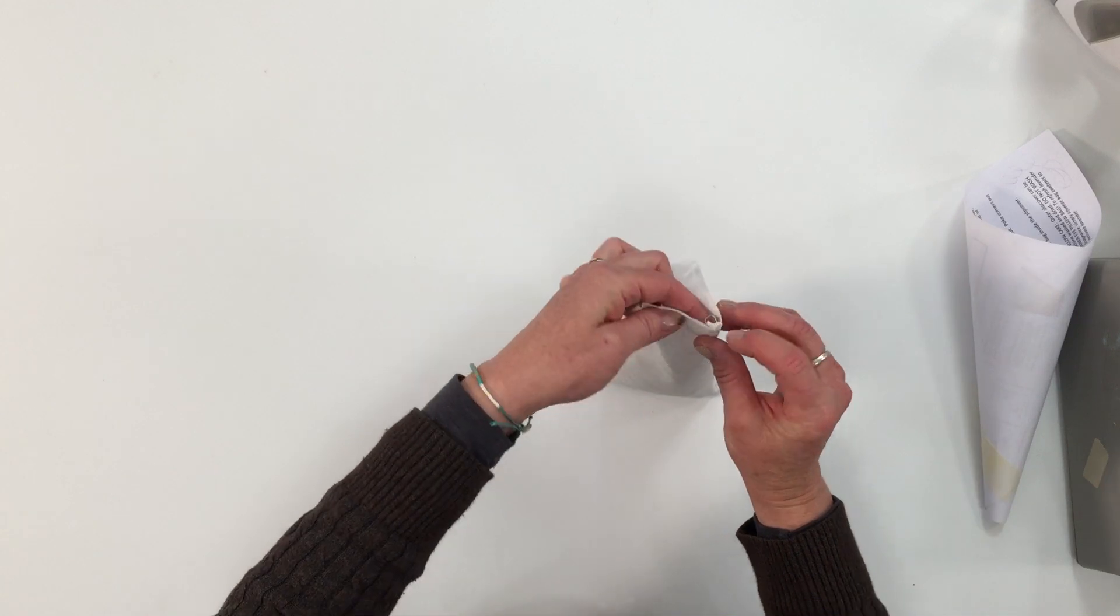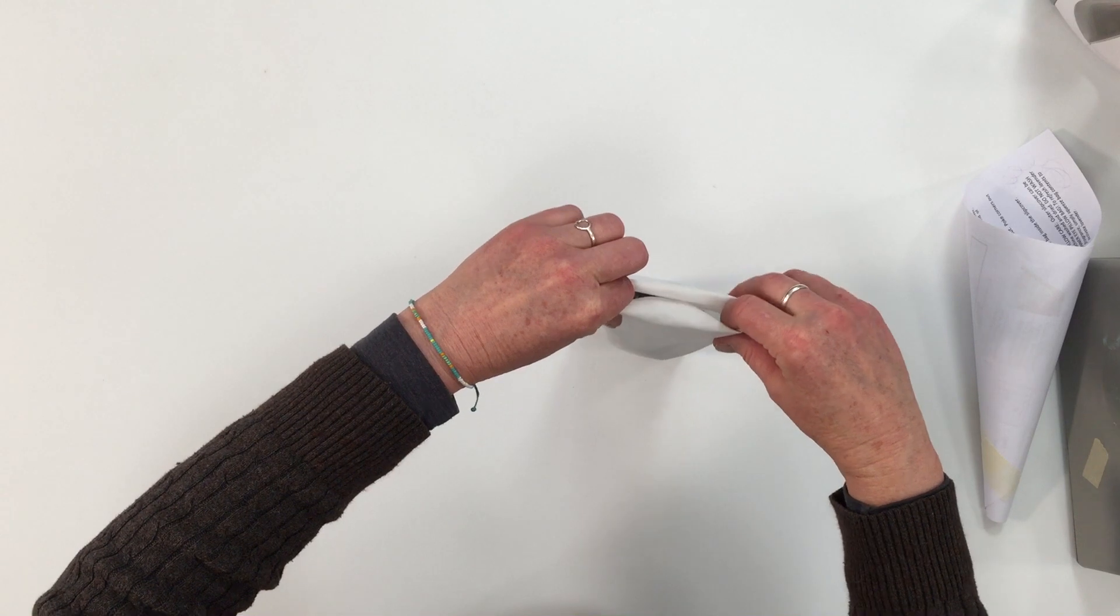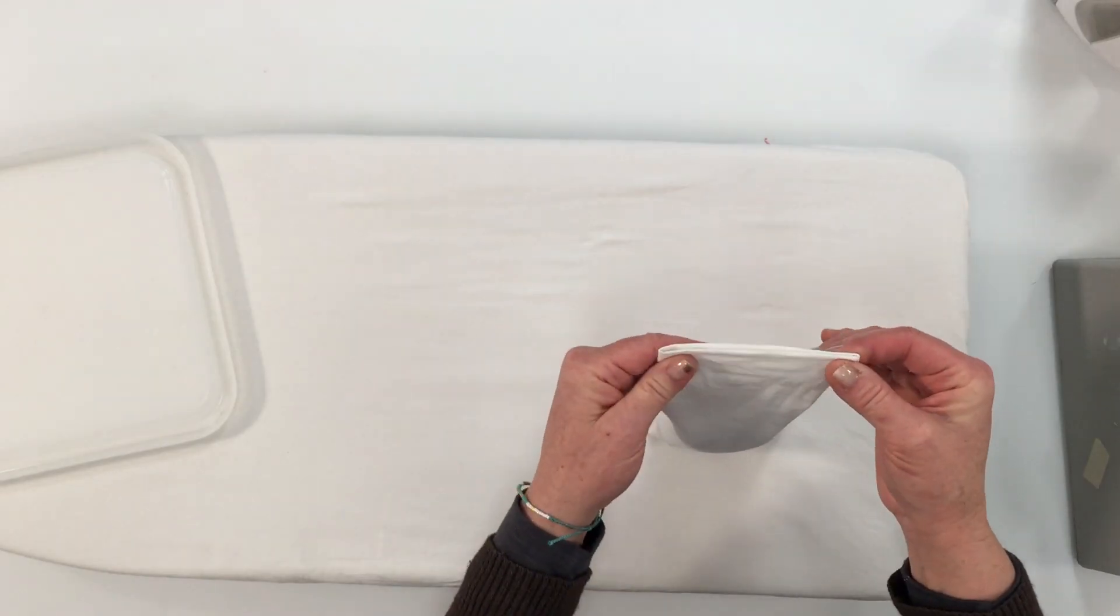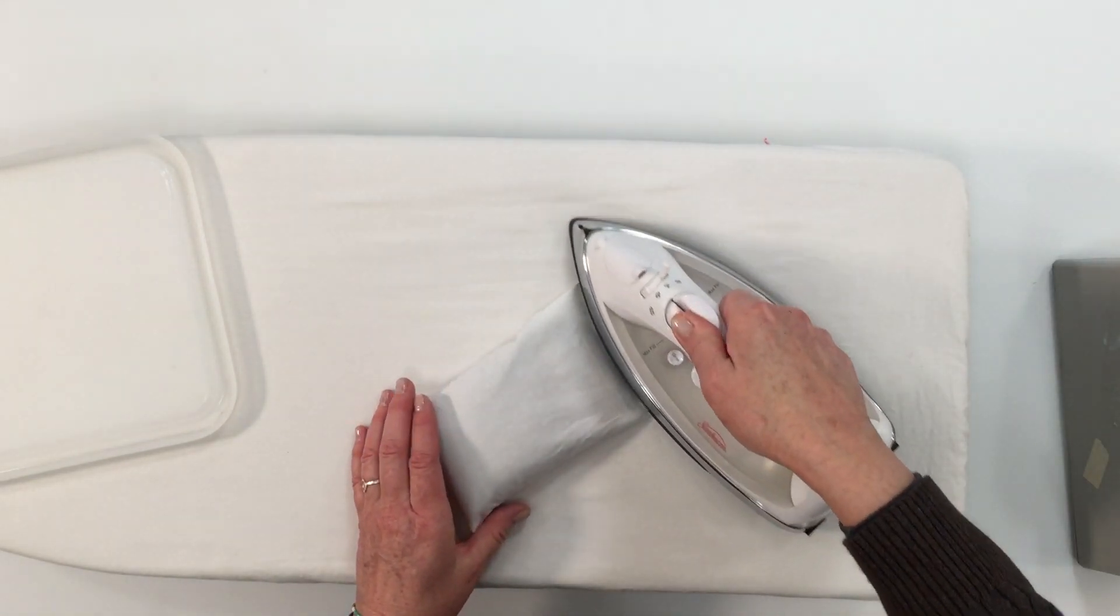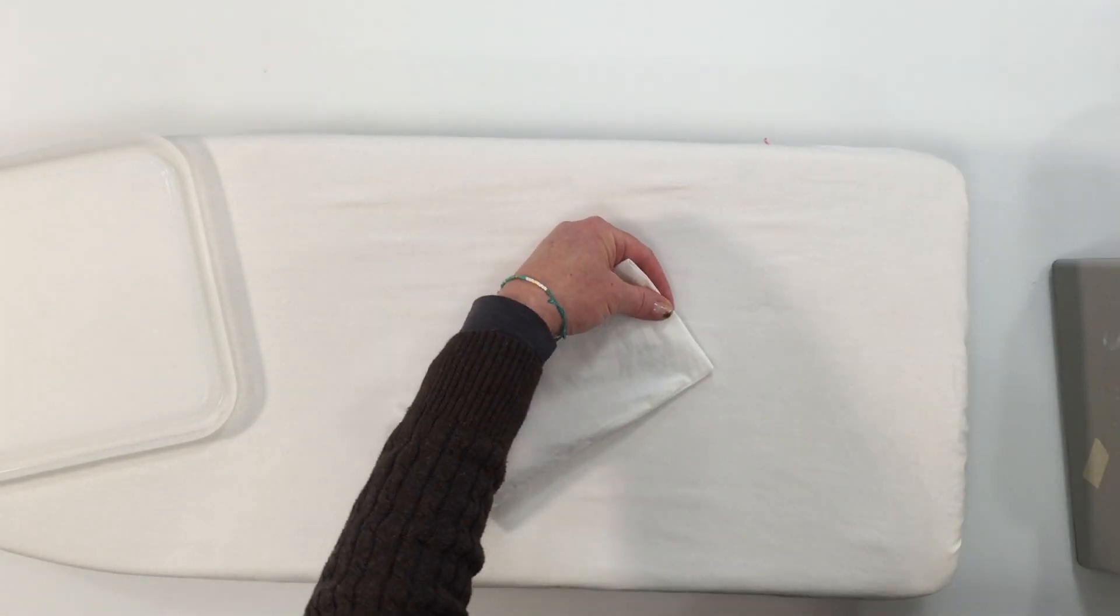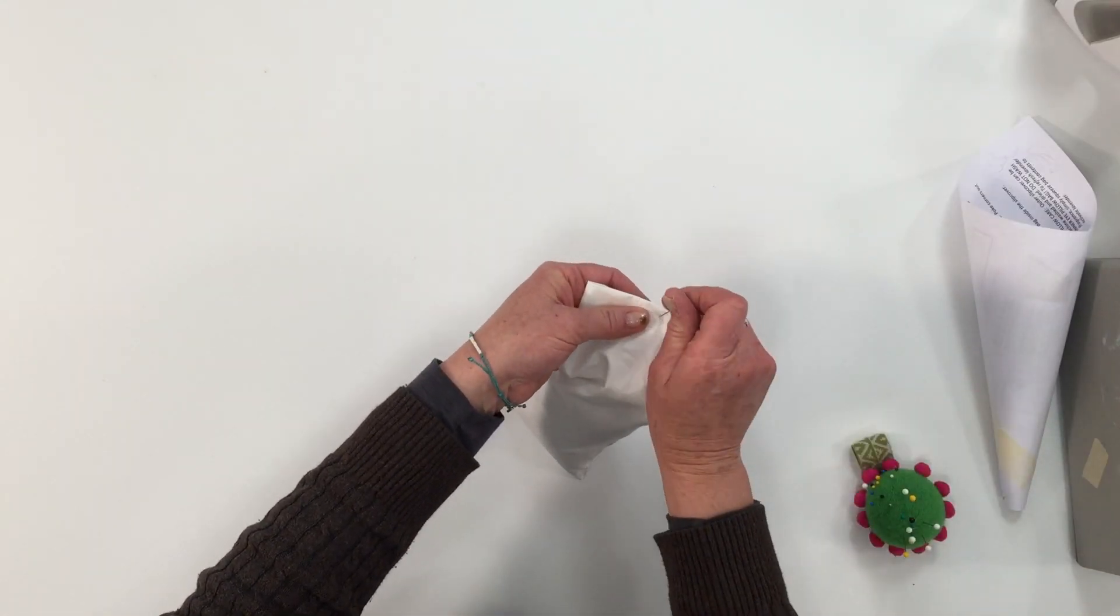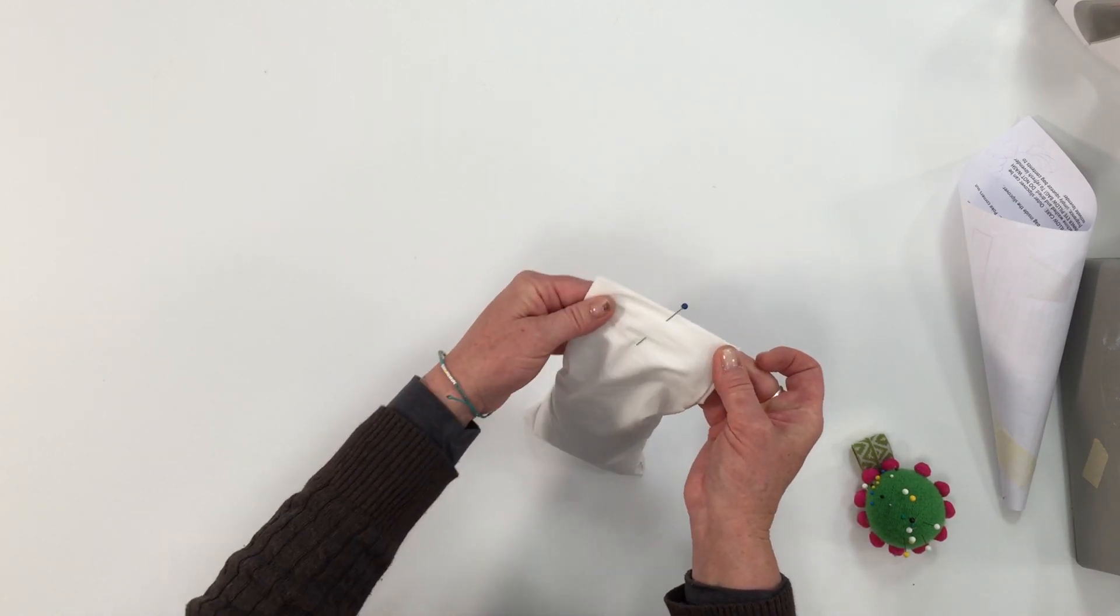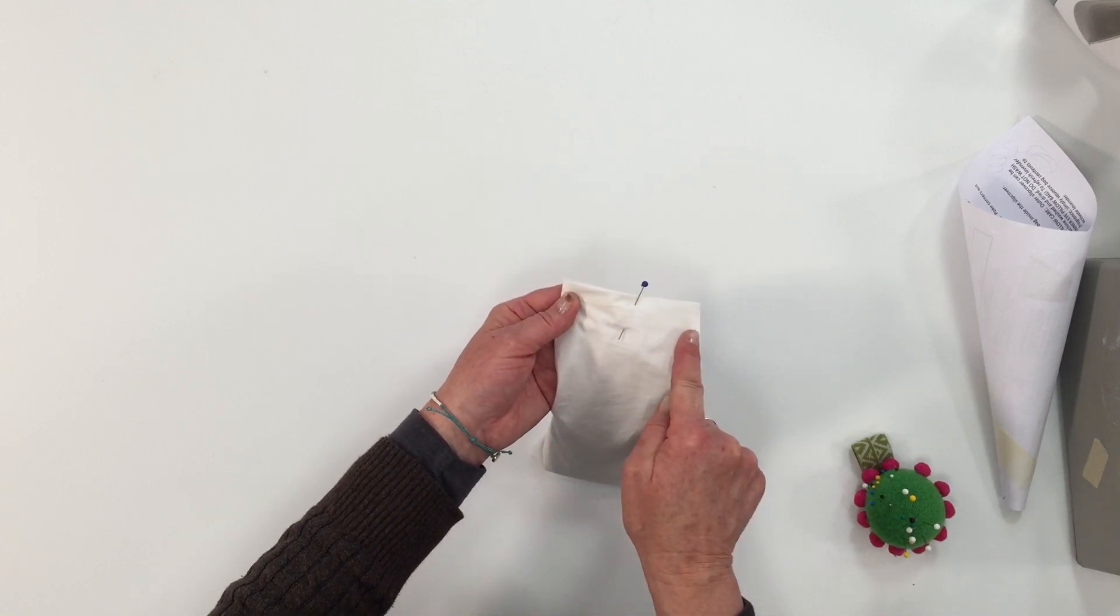Next we're going to just fold it under about a half an inch. Just even that up and you can give it a quick press if you want. And either pin it or clamp it in place. We're just going to take it to the sewing machine. Top stitch with the single needle just right across the edge, backstitching at the beginning and end of the seam.